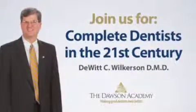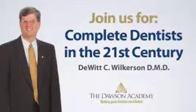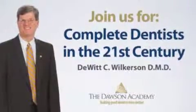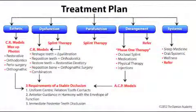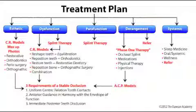This is a broad outline that we're going to go through step-by-step in this upcoming course. We're going to help you with the appropriate use of splint therapy, phase one therapy for patients that have internal derangement, how do we know when we're stable, when should we refer, how do we work with the physical therapist, and when would we consider using medications and what would be appropriate.